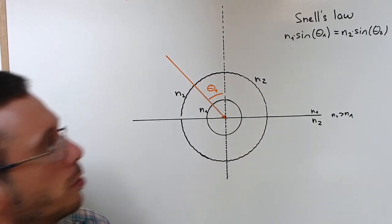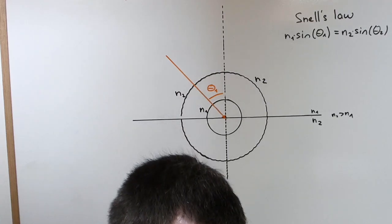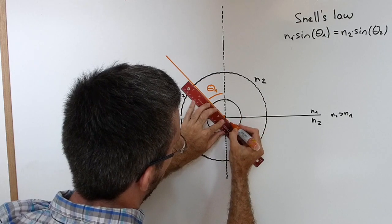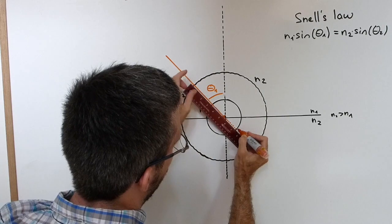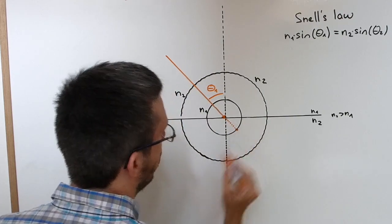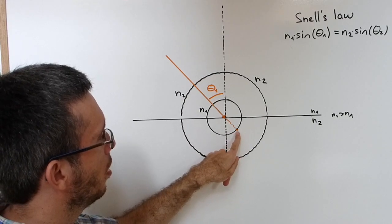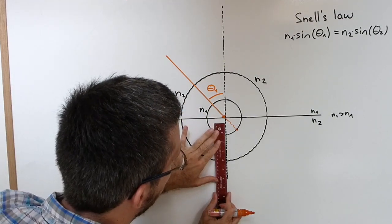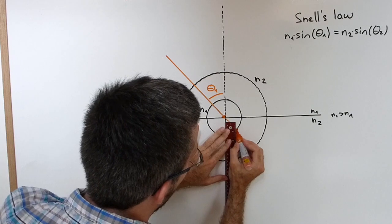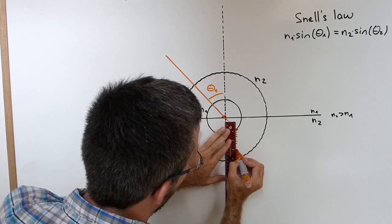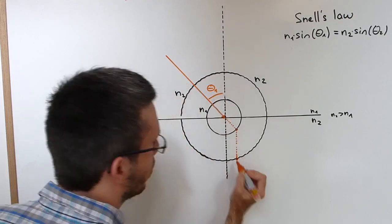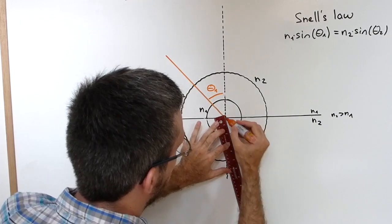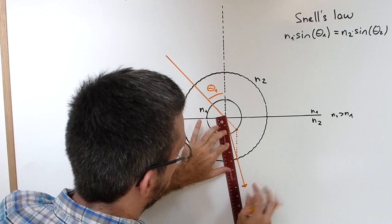Now all you have to do is continue your incoming ray until it hits the circle of the index of refraction where you are coming from, in this case n1. And then make a parallel line and connect this to the circle of the second index of refraction. And you have found your refracted ray.